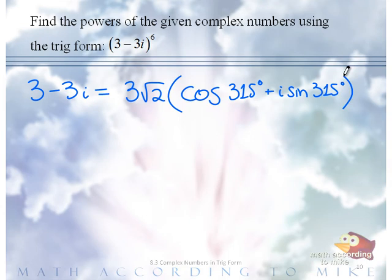So, previously we found 3 minus 3i is 3 square root of 2, cosine of 315 degrees, plus i sine 315 degrees.